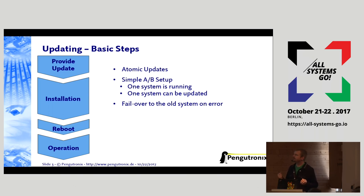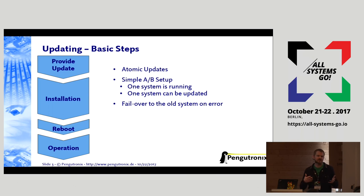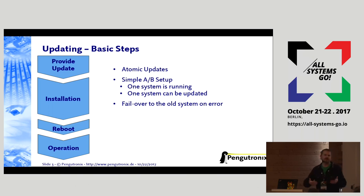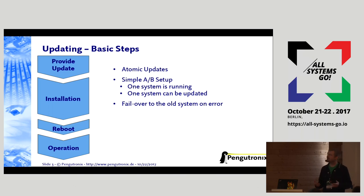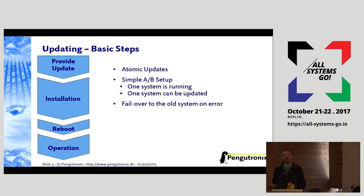Writing the update itself is mostly generic — there are a few ways to do it, like writing a filesystem image to disk or formatting a new filesystem and extracting a tarball. That's not really project-specific; it can be implemented once and tested well. But when it comes to checking whether the new system is actually starting, there are a lot of ways that can fail, and many of those are project-specific.